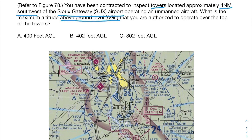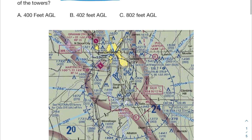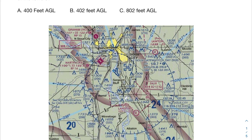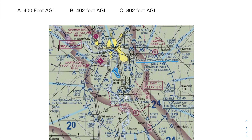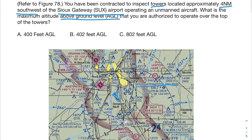Let's go ahead and take a look at figure 78. You'll notice our airport is right here — I knew that because it's labeled, and it's also the only airport on this figure. So we want to figure out the towers four nautical miles southwest. Southwest is going to be in this direction, so if I had to guess, it would probably be this tower here.